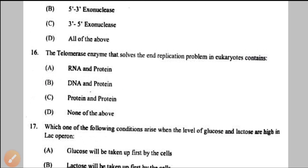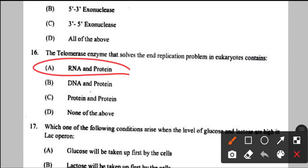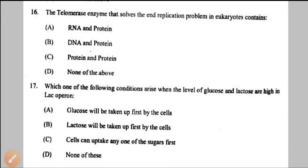Question number 16: the telomerase enzyme that solves the end replication problem in eukaryotes. Telomerase protects chromosome ends from shortening during DNA replication. It has two components: the protein part TERT (telomerase reverse transcriptase) and the RNA part TERC (telomerase RNA). So the answer is RNA and protein — option A.